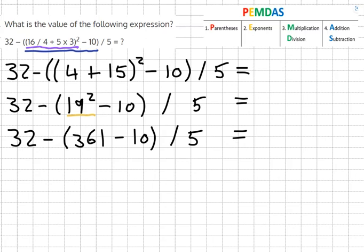And then it's simple subtraction inside of the parentheses. So it becomes 32 minus 361 minus 10 equals 351 over 5 equals 70.2. And now it's just the division.